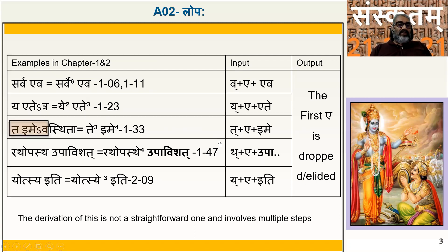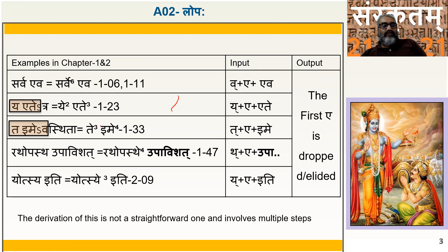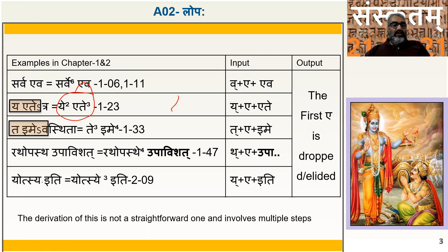Similarly, 'Ye Te Atra Samagatah.' In this case there are 3 specific words: Ye, Ye Te, and Atra. As we are discussing Ye O to Lopaha, we are concentrating only on Ye and E Te. So looking at Ye and E Te, the Ekaram after Ye is dropped.